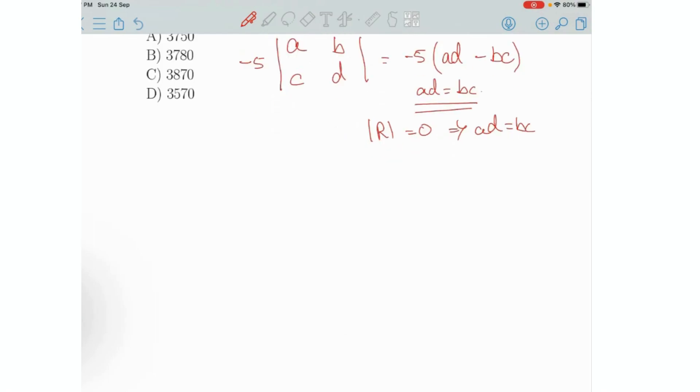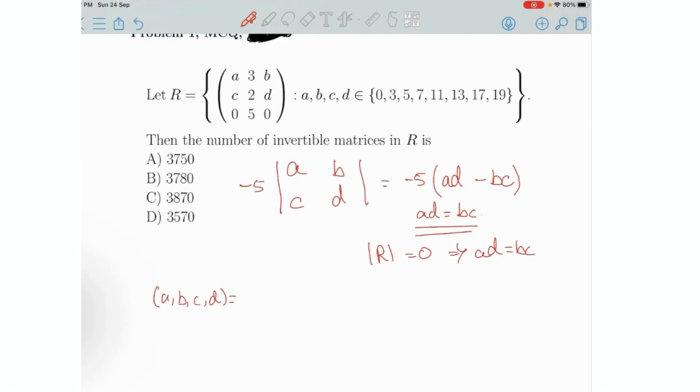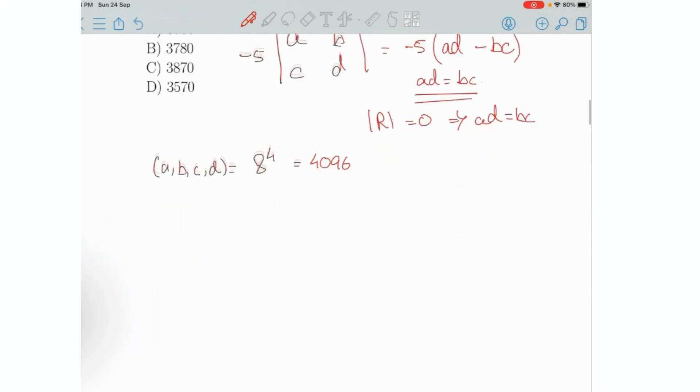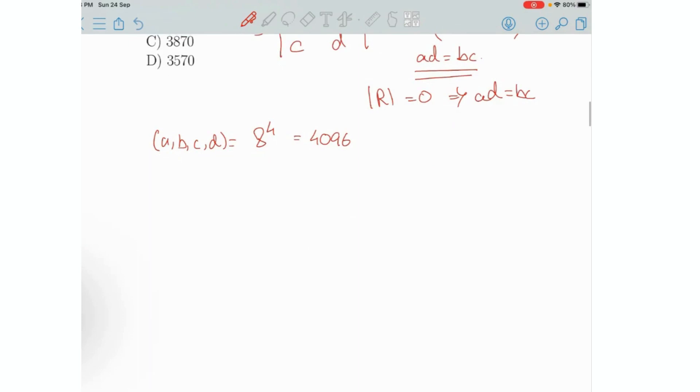Now, all possible combinations of A, B, C, D will be how many? Look, there are eight choices here, right? So A, B, C, D can be any of these eight numbers. So it will be 8 to the power of 4, which equals 4096 possible permutations of A, B, C, D. Now, we'll have to calculate the number of cases for which the determinant of R is equal to 0. The determinant of R is equal to 0 if AD equals BC, right? You guys with me till now?